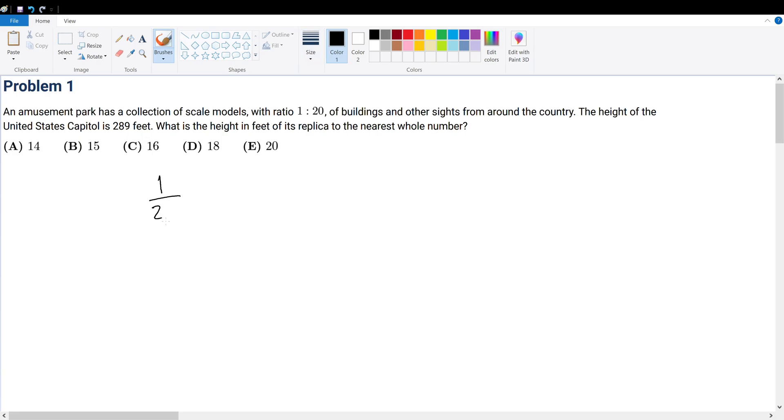So 1 to 20 equals replica over actual. And in this case, we know that the actual is equal to 289. And we're trying to solve for the replica height. So the replica height must be equal to 289 over 20.